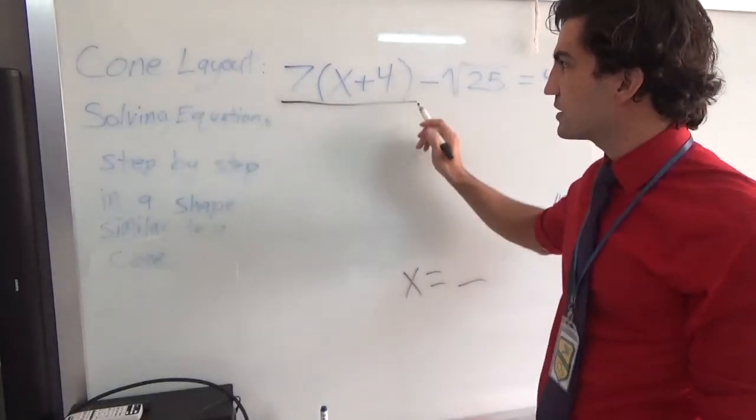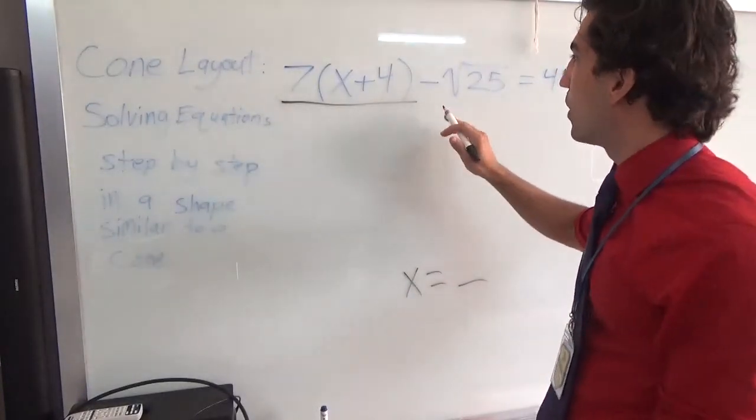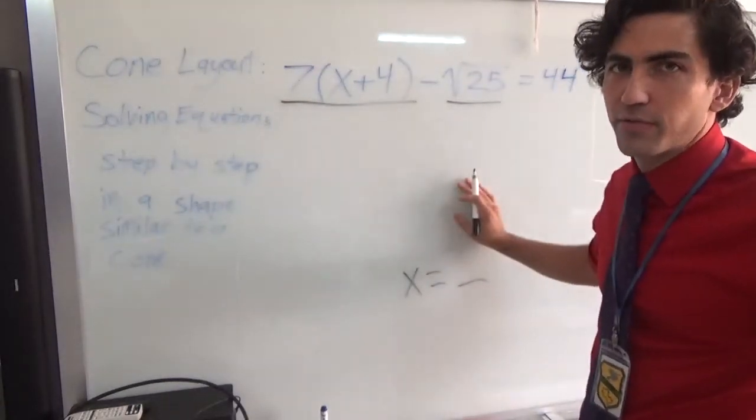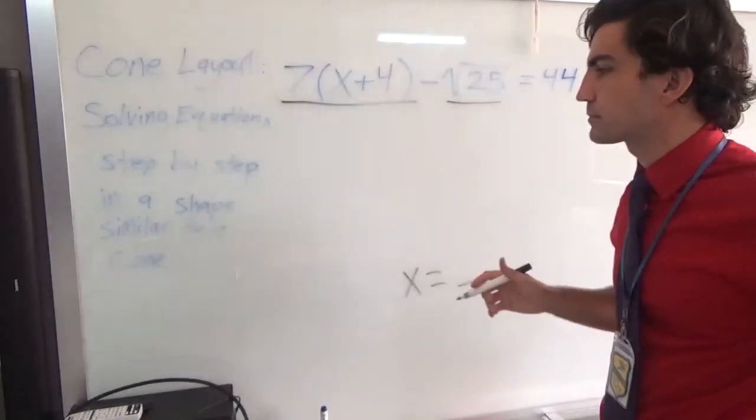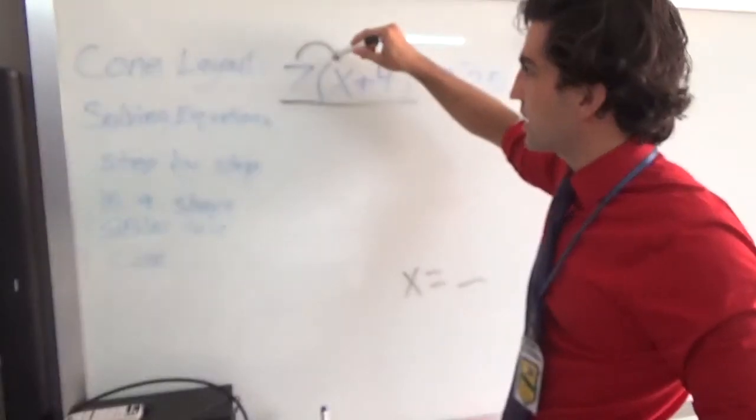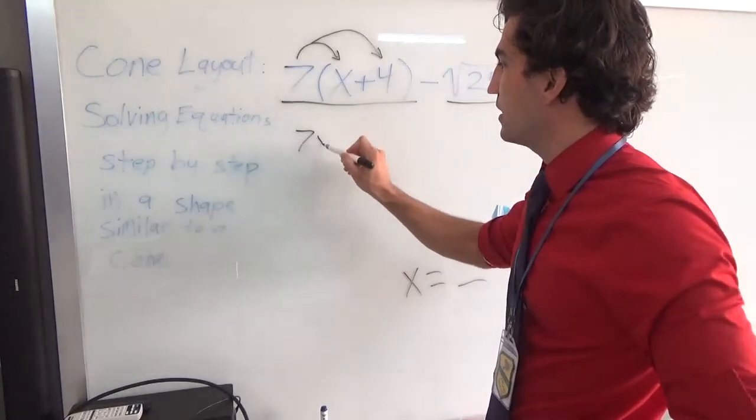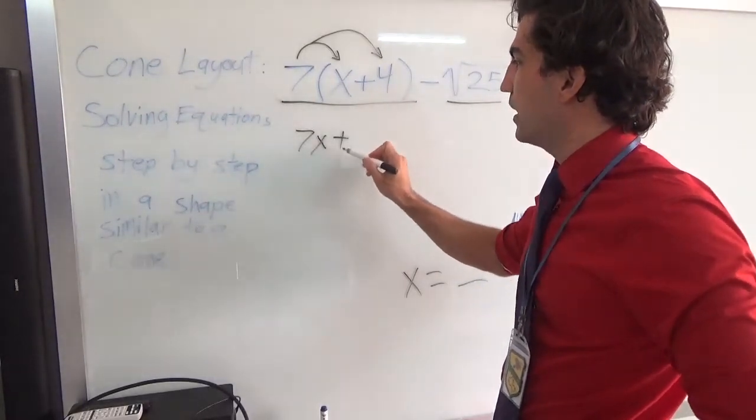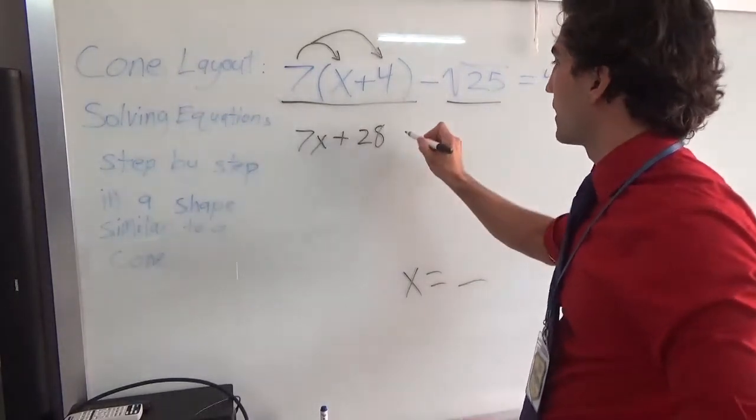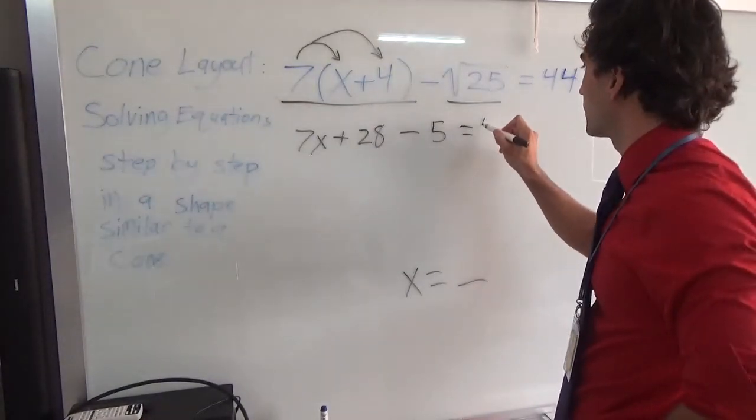I can tell that I want to distribute this into this part or I will take the square root of 25. And I can do those both at the exact same time. So if I'm going to distribute, I need to multiply the 7 times the x and times the 4 separately. We will have 7x plus 7 times 4 will be 28 minus the square root of 25 is 5 equals 44.